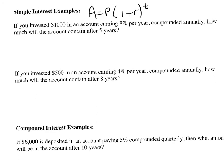Here's our example. If you invested $1,000 in an account earning 8% per year compounded annually, how much will the account contain after 5 years? Our beginning amount is the amount we invested, so P equals $1,000. R is our interest rate, 8%, which is 0.08.